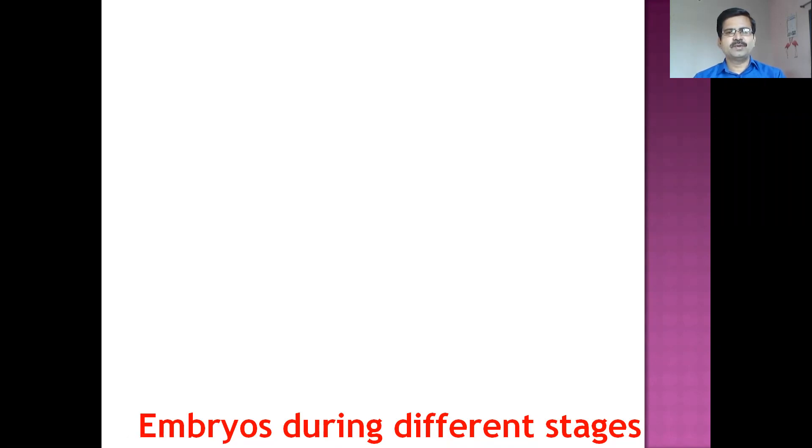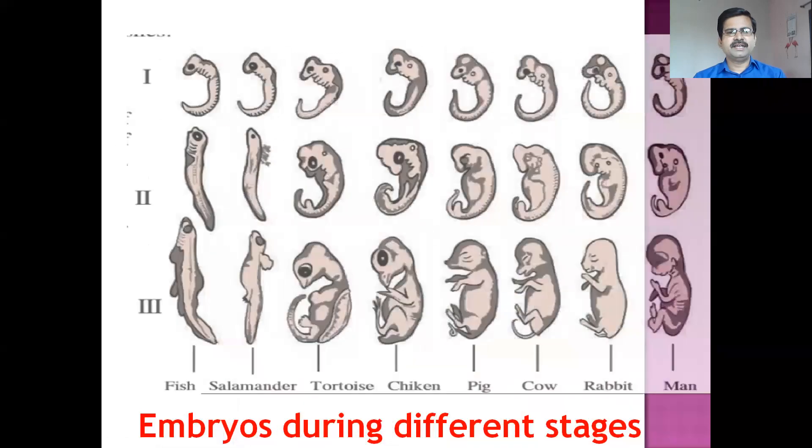Welcome students. In the previous video we have seen the fifth evidence, that is the connecting link, which supports the theory of evolution. Now in this video we are going to see the last evidence, that is the sixth evidence, and this evidence is called the embryological evidence, which supports the theory of evolution.